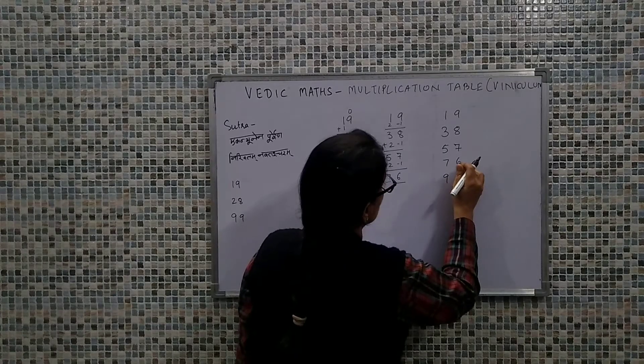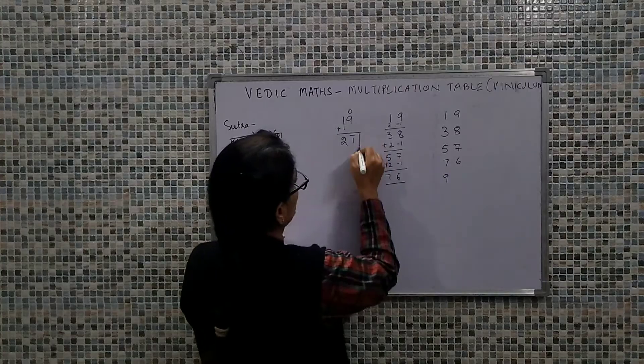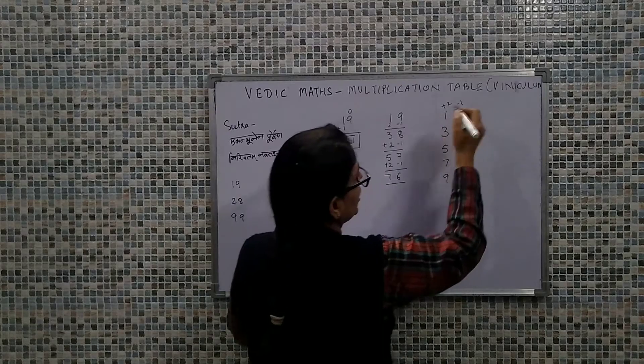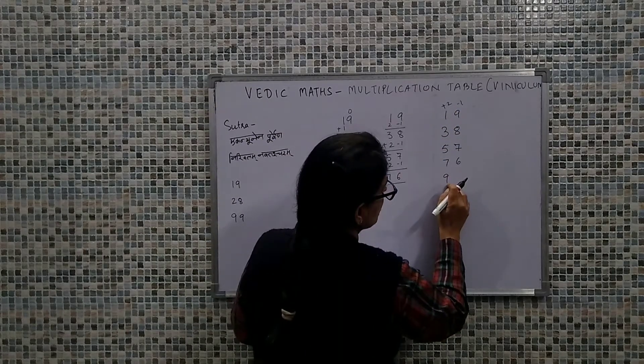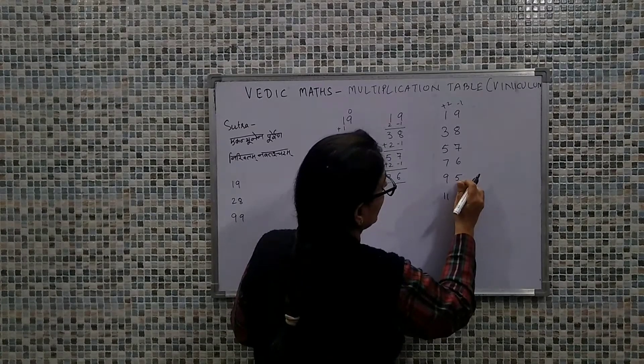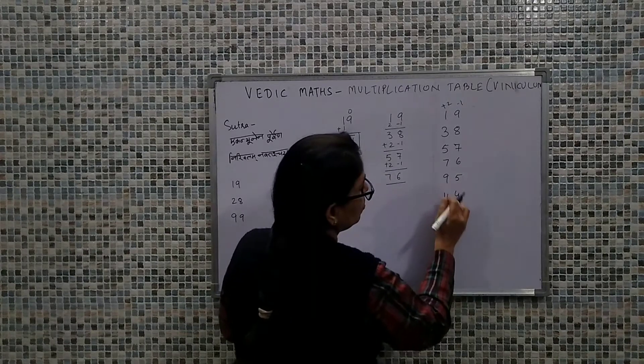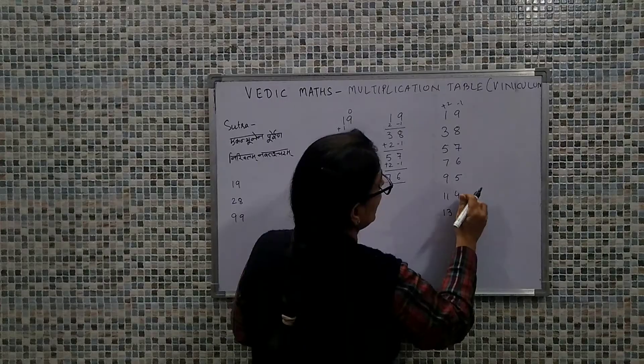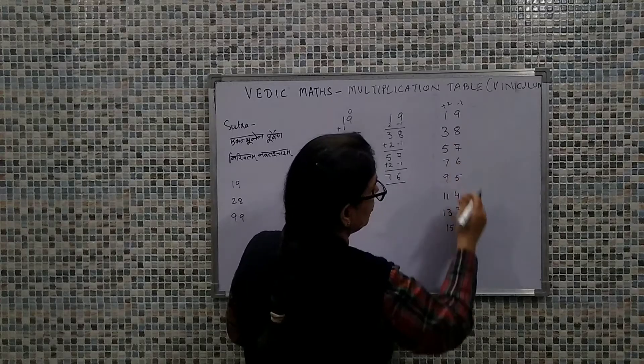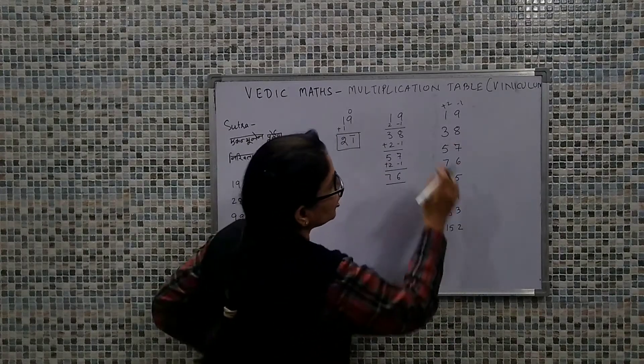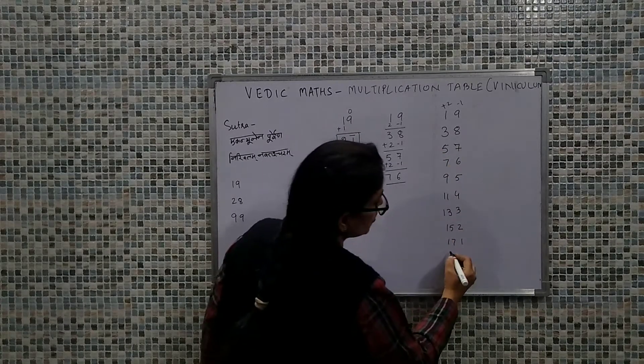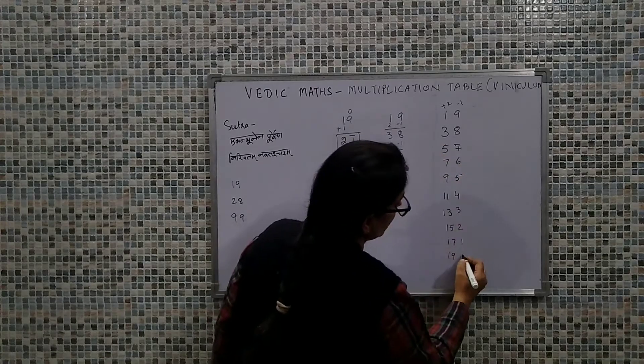Now we can do this verbally. This value needs plus 2 and this needs minus 1. So 7 plus 2 is 9, 6 minus 1 is 5, that's 95. 9 plus 2 is 11 and 5 minus 1 is 4, that's 114. 11 plus 2 is 13 and 4 minus 1 is 3, that's 133. 15 plus 2 is 15 and 3 minus 1 is 2, that's 152. And 15 plus 2 is 17 and 2 minus 1 is 1, that's 171. 17 plus 2 is 19 and 1 minus 1 is 0, that's 190.